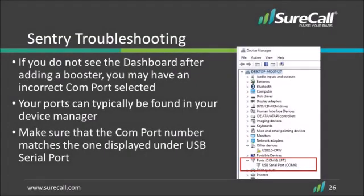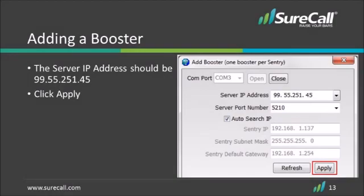The server port number will always be 5210. If for some reason you do not see the dashboard after adding a booster, you may have an incorrect COM port selected. Your ports can typically be found in your device manager. Please make sure that the COM port number matches the one displayed under USB Serial Port. The Sentry IP server address can be found here. Once the information for the IP address and the server port number match what is on this screen, click Apply.